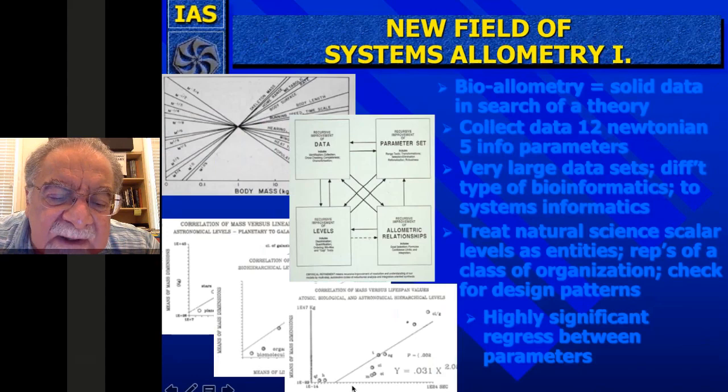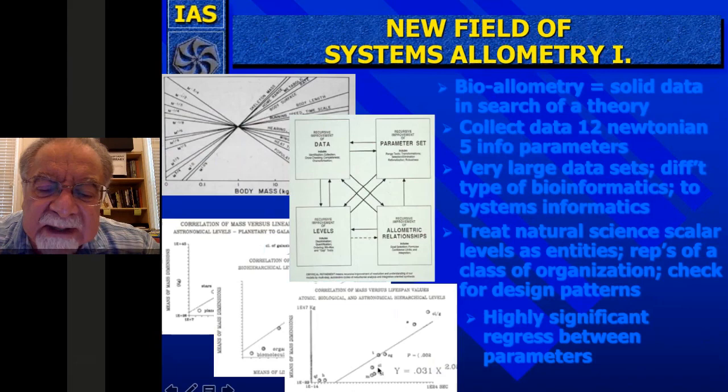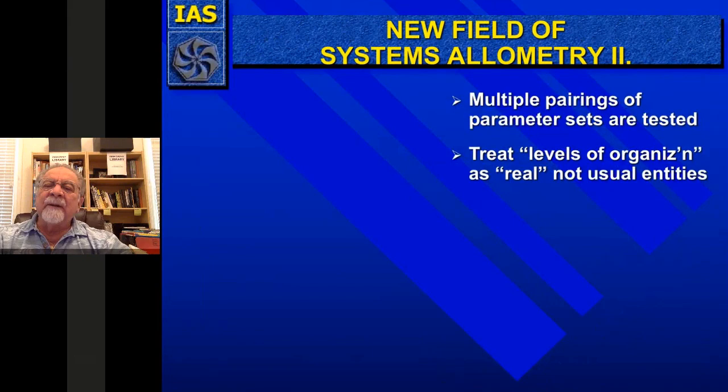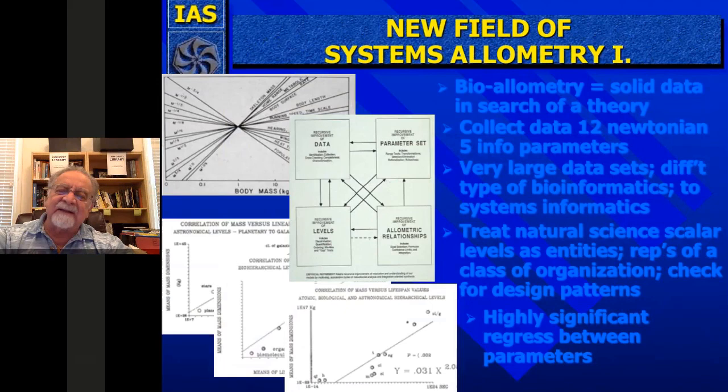We've shown this for a number of different things. In this case we mixed lifespan data and mass dimensions across astronomical and biological things, going down all the way to the molecular, and get y equals 0.031 times x squared. So you get these allometric equations. I call these systems parameters. It shows in another way why I say nature is spinning off the same system over and over again — not just the isomorphies that show similarities, but the data of the real things in the levels of organization that show these similarities.